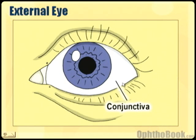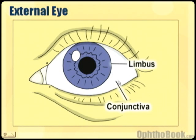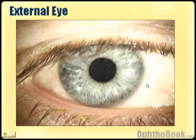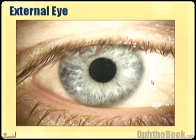People that get conjunctivitis get an infection of this layer of tissue. The conjunctiva actually inserts right here at the limbus where it becomes clear cornea, and that's the front of the eye. If we take a picture, we see here's the limbus and the conjunctiva is a thin layer of tissue. There are actually little blood vessels running through the conjunctiva, and when you get a conjunctivitis, these blood vessels will dilate and get very red — that's why your eyelid's pink.